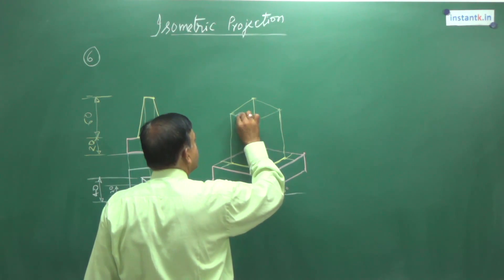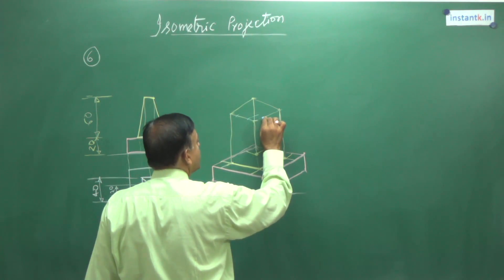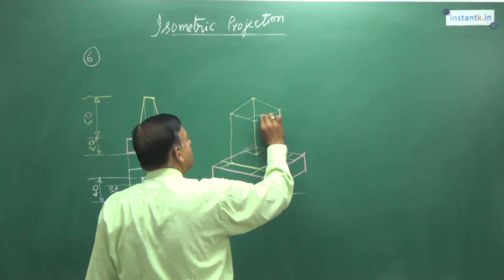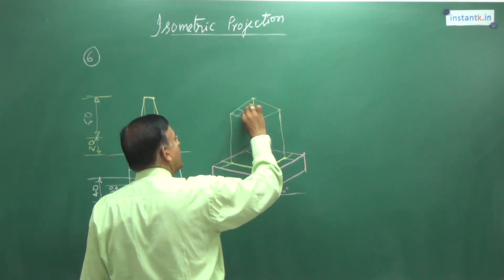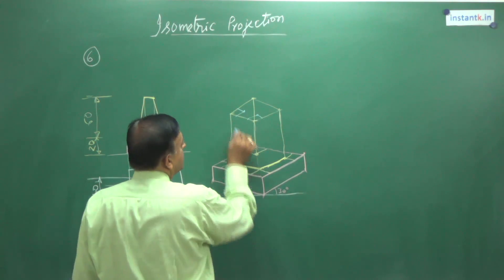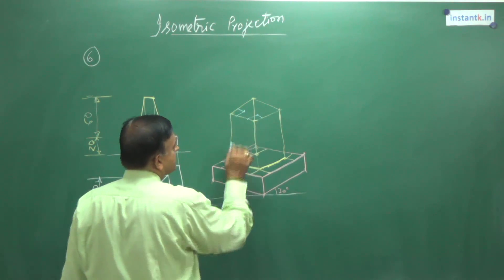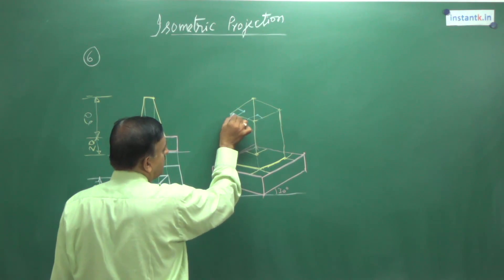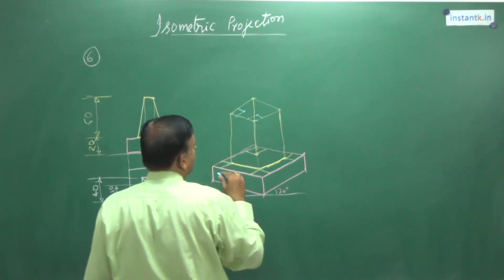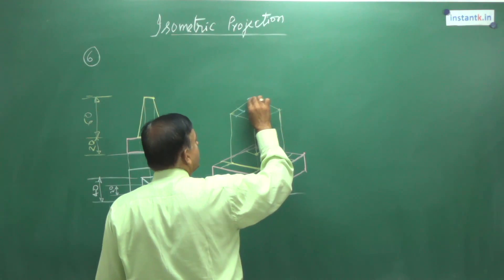So reduce 10 here, reduce 10 here, draw a 30 degree line. 10 here, draw a 30 degree line. You are getting 20 mm. 10 here and 10 here. So this is 30 degree line parallel to this. This is 30 degree line parallel to this. So you get a parallelogram there.